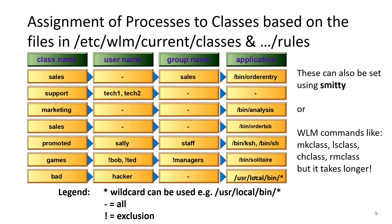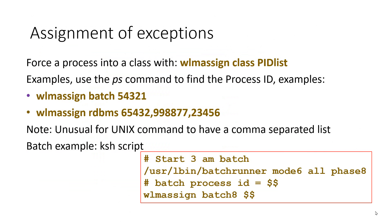We also have negation using the exclamation mark, or 'bang'. So we can say, for example, that users Bob and Ted can't play games — meaning their processes don't go into the games class if they try. Now we have exceptions. If you've got a particularly complicated combination requiring a specific process with a specific argument, you can find the processes with a ps command to get the PID, then use 'wlm assign', the class name, and the process ID. You can also pass a comma-separated list of process IDs.